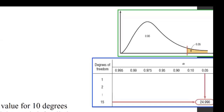Here's the table. You have df = 15 and the area of 0.05 — remember the area to the right is what we need — and chi-square becomes 24.996.